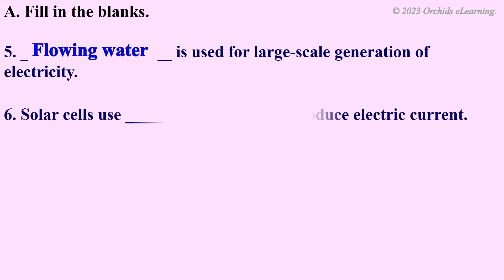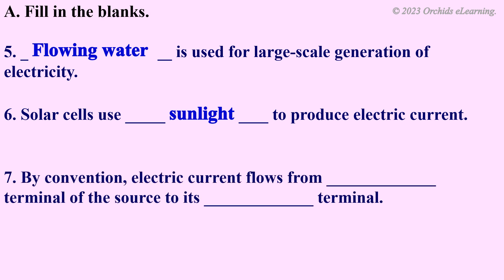Solar cells use sunlight to produce electric current. By convention, electric current flows from positive terminal of the source to its negative terminal.